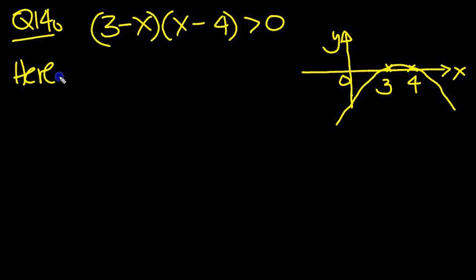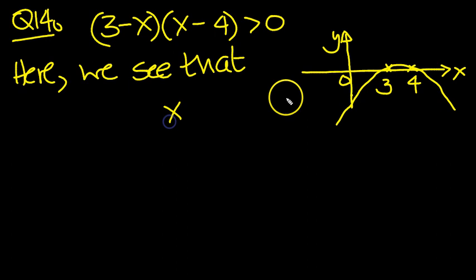So from the sketch, we see that x can go up to 4, can't it? Because this is greater than 0, it cannot touch 4, so it must be less than 4,